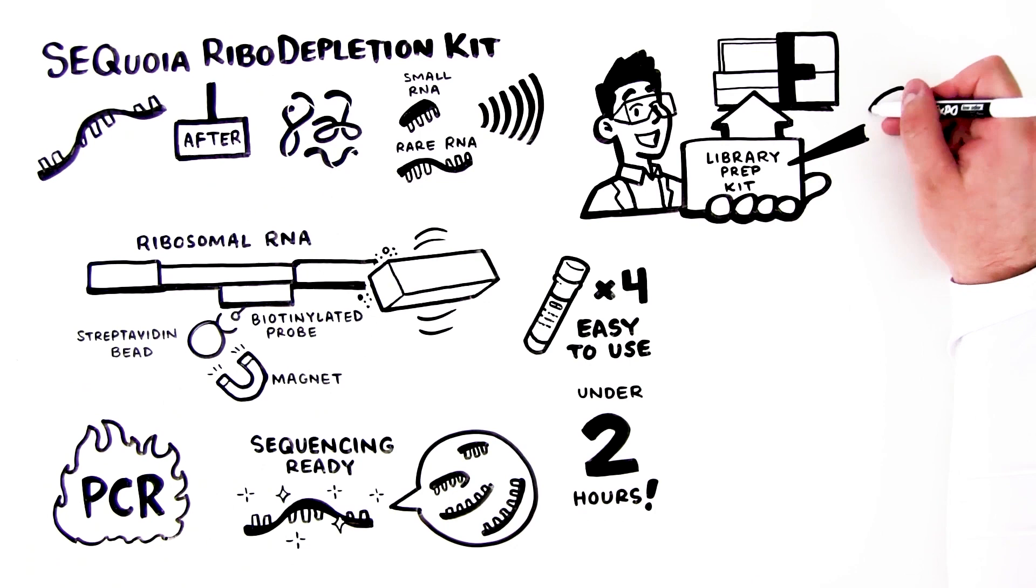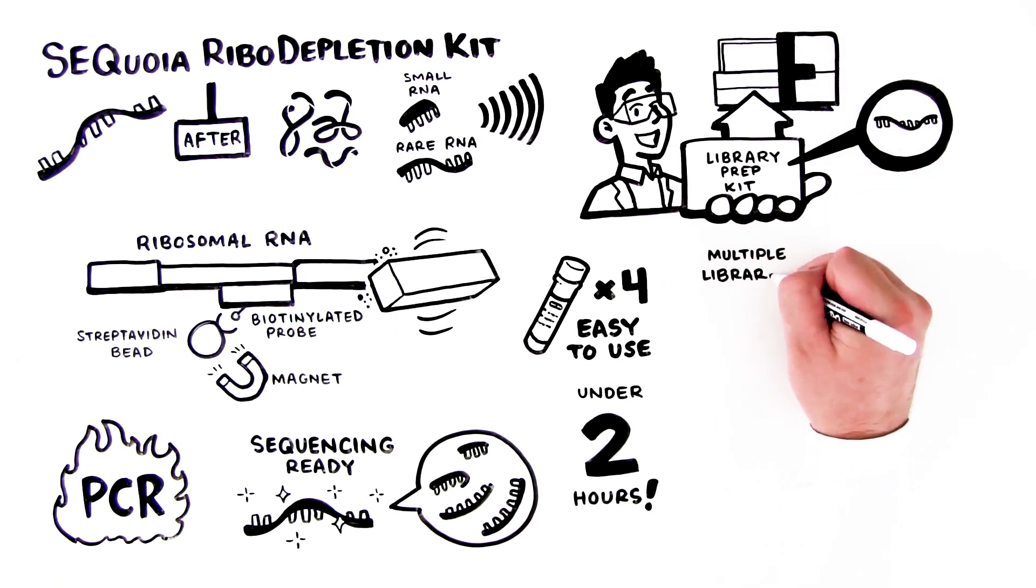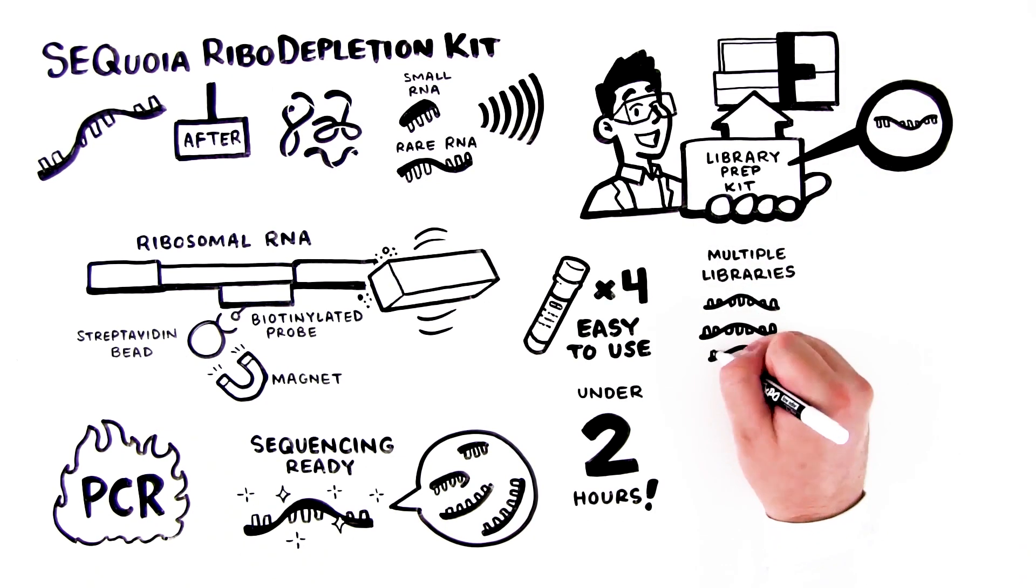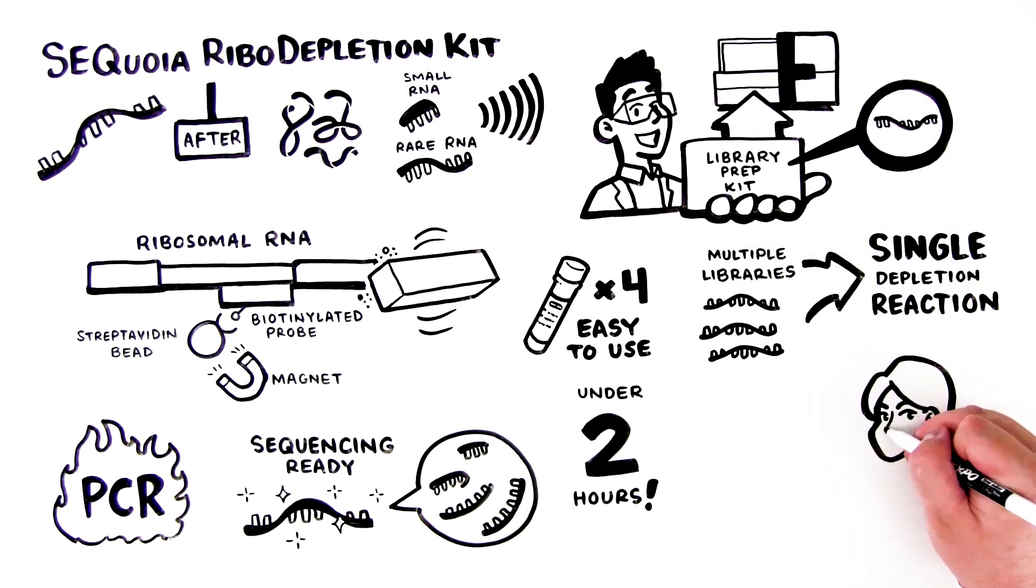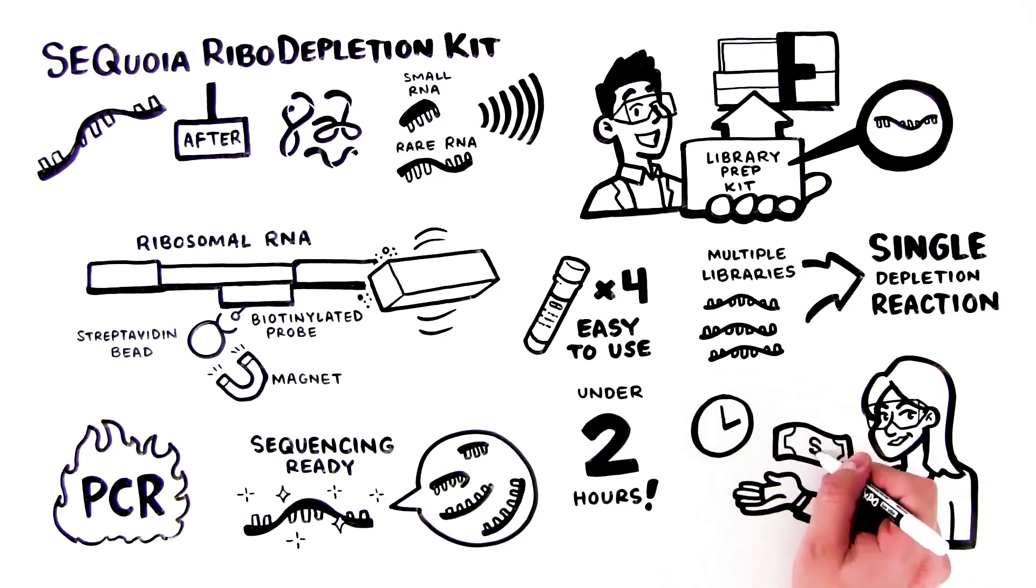And because this kit uses library constructs as the reaction template, multiple bar-coded libraries can be pooled into a single depletion reaction, saving considerable time and greatly reducing costs.